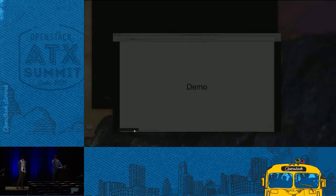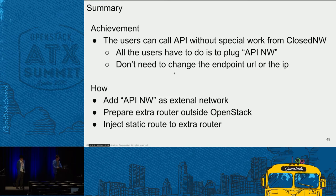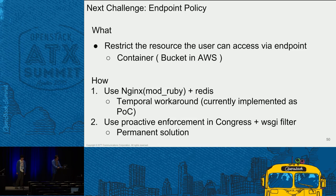Going back to the session summary and our next interests: this time we focused on how to access Swift from a closed network while restricting internet connectivity. As you saw in the demonstration video, we achieved that users can do it without special work — all they have to do is connect to the API external network, and they can use the same endpoint IP and credentials as via public. To achieve it, we added API network, prepared an extra router outside OpenStack, and injected static routes to the extra router. Now that we can access Swift without internet connectivity, our interest is moving to endpoint policy.